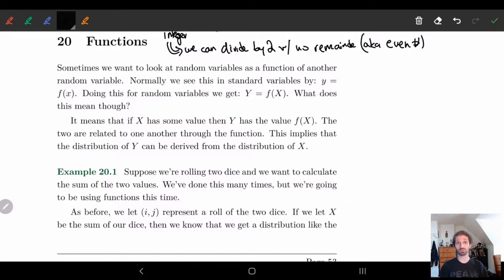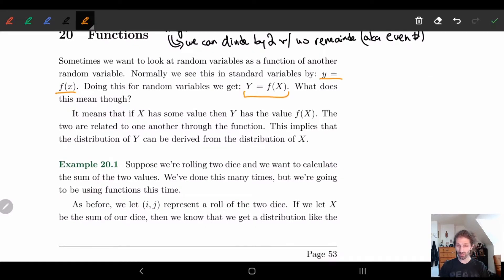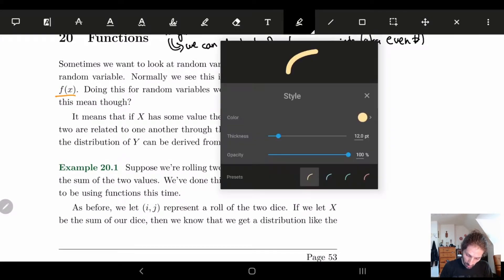So normally in a standard way using standard variables, we get something like this: Y equals f of X. When doing this for random variables, we get the exact same thing, Y equals f of X. But what does this mean exactly? Basically, what this is really saying is, if X has some value, then Y has the value f of X.